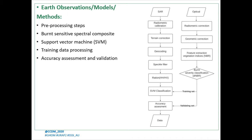The second step was the burnt-sensitive spectral composite, which mainly focused on vegetation indices — specifically the normalized band ratio indices. The third step involved the support vector machine, which was the contextual classifier and machine learning algorithm used in our analysis. The fourth step was the training data process, where we looked at the methods used to obtain both training and validation sets, and validated them using accuracy assessment.